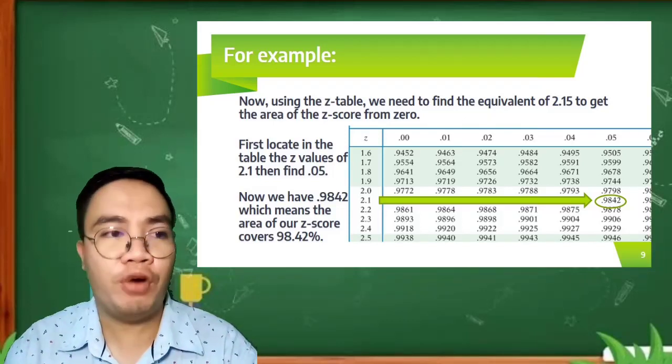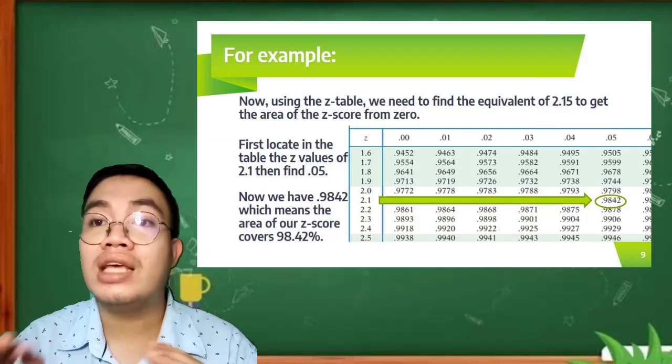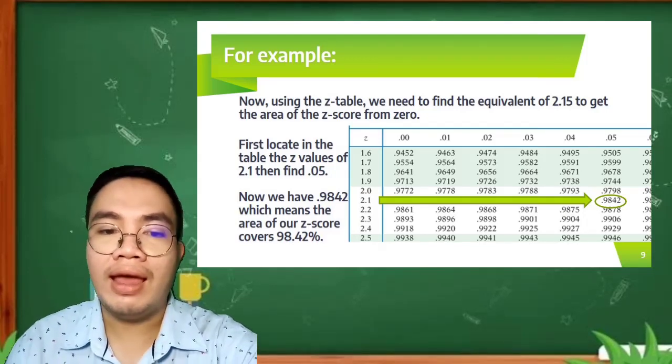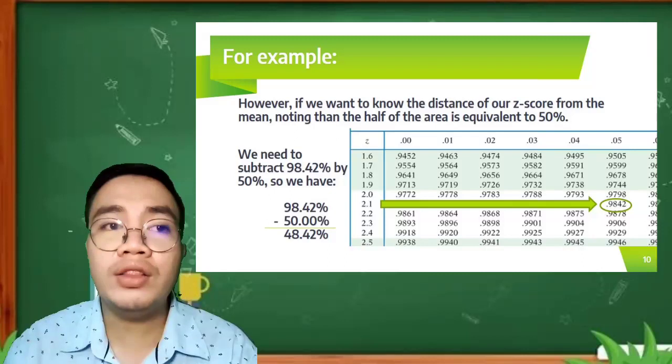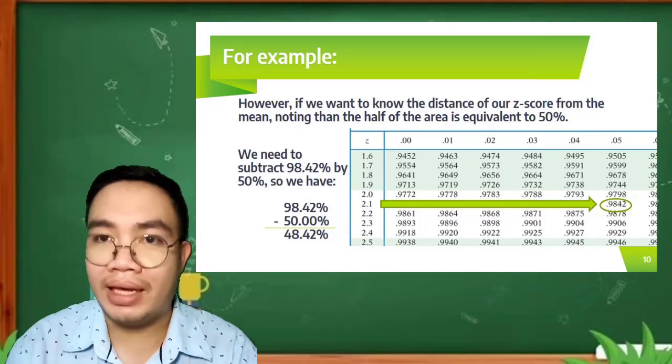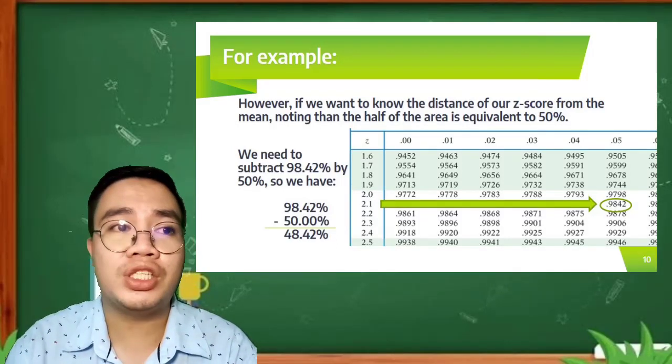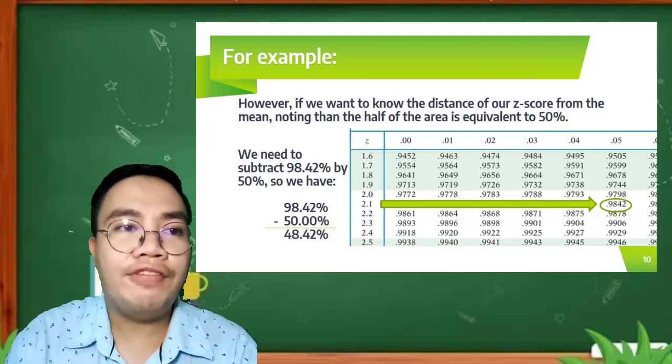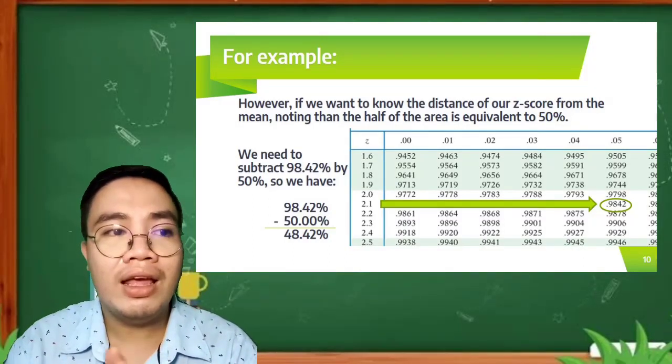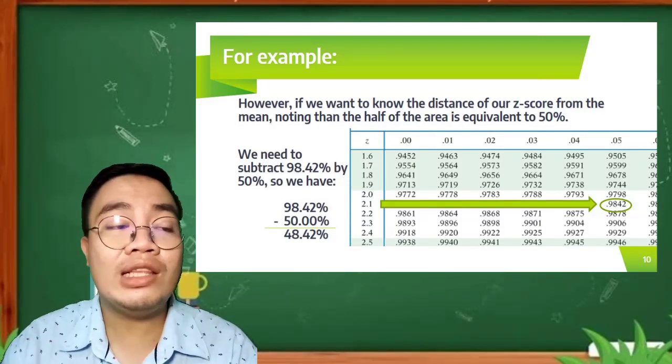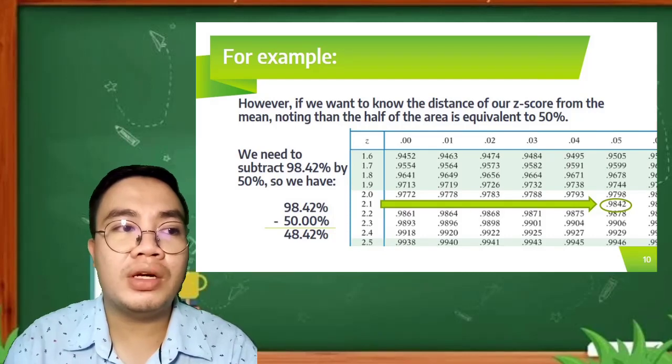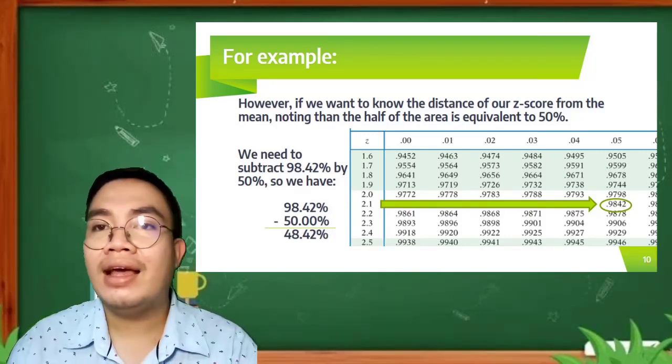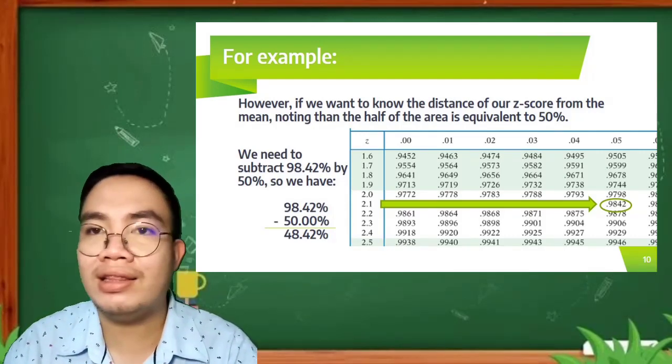What does that mean? We have 0.9842, which means the area of our Z-score covers 98.42% of our normal distribution. However, if you want to know the distance of the Z-score from the mean, the mean falls at the center of our normal distribution and from there, it holds 50% of the data. To get how far the Z-score is from the mean, we need to subtract 98.42% by 50%. So we have 98.42% subtracted by 50%, then we get 48.42%. That is how far it is from our mean.